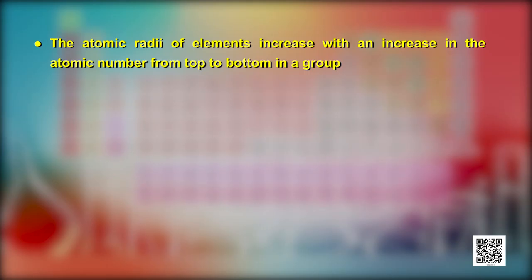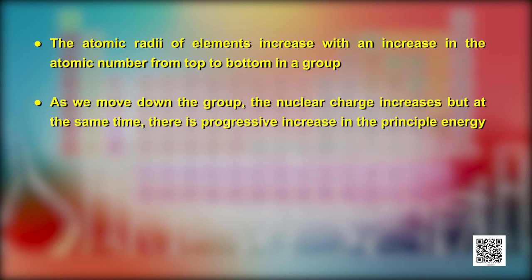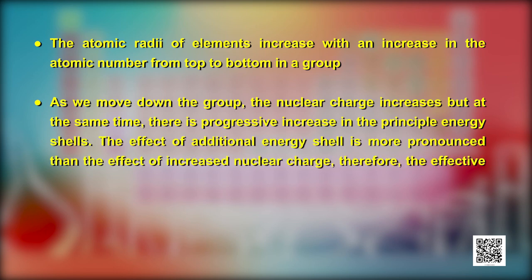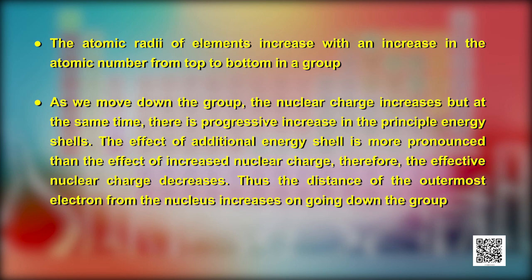Atomic radius increases from top to bottom within a group. As we move down the group, the nuclear charge increases, but at the same time there is a progressive increase in the principal energy shells. The effect of the additional energy shell is more pronounced than the effect of increased nuclear charge. Therefore, the effective nuclear charge decreases, and the distance of the outermost electron from the nucleus increases on going down the group.